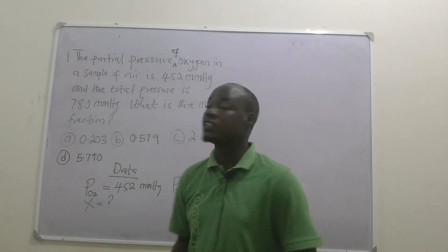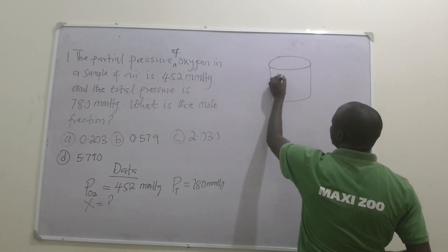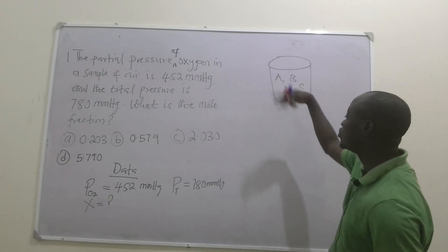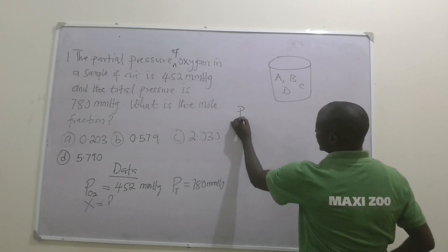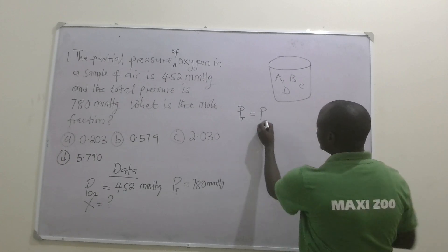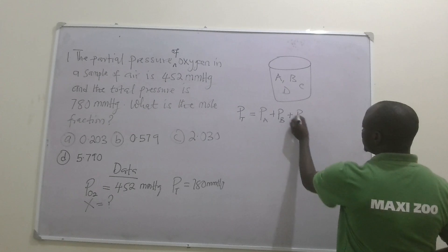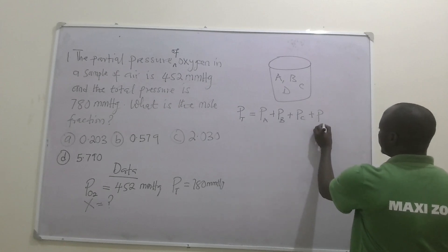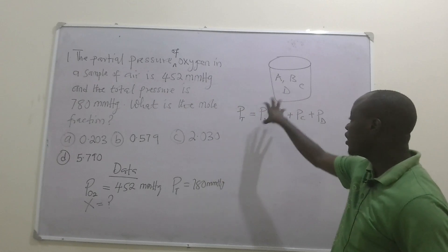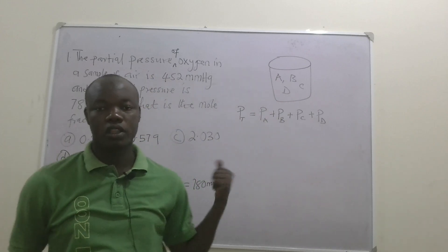So the total pressure of a gas is the sum of the partial pressures of the individual components. If inside a container you have different gases — gas A, gas B, gas C, and gas D — then P total equals the partial pressure of A plus B plus C plus D. That is how you get the total pressure of the gases.